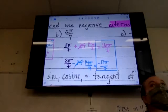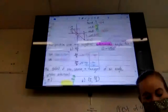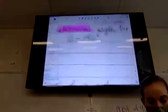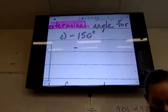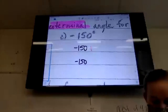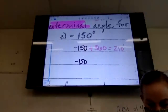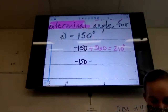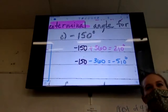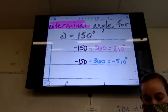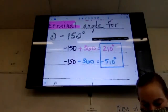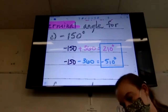The next problem is very similar — I just gave you a negative angle to start with, but we're still going to add 360 and subtract 360. Go ahead and work on that.